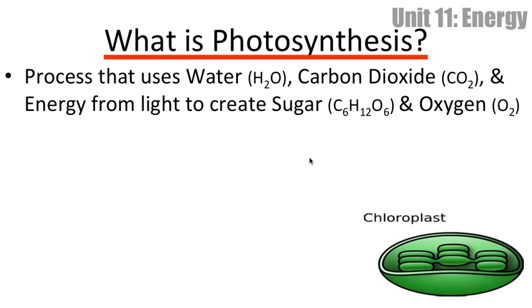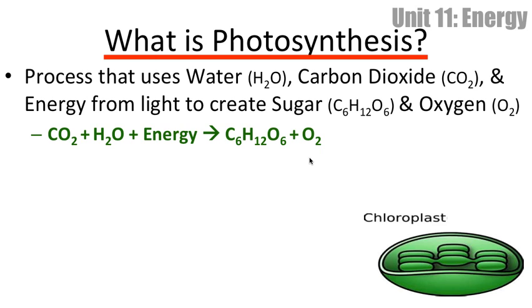You should know it by now — you probably learned it back in middle school. It's the process that plants do to take water, carbon dioxide, and energy from sunlight and convert it to sugars and oxygen.